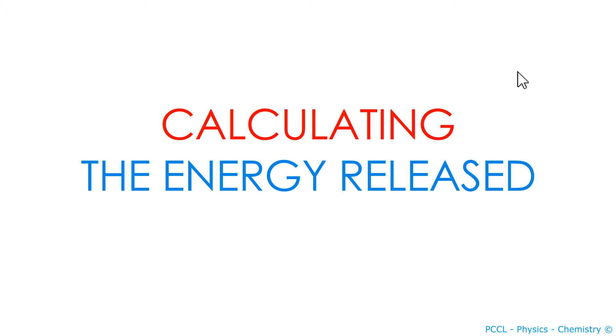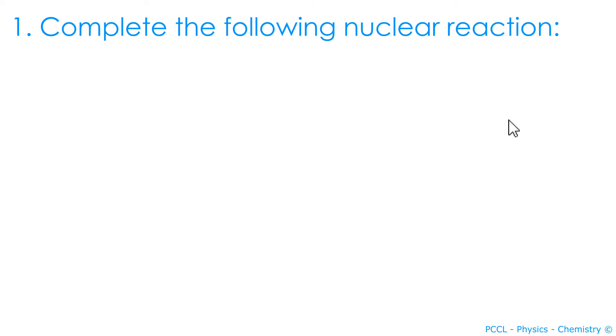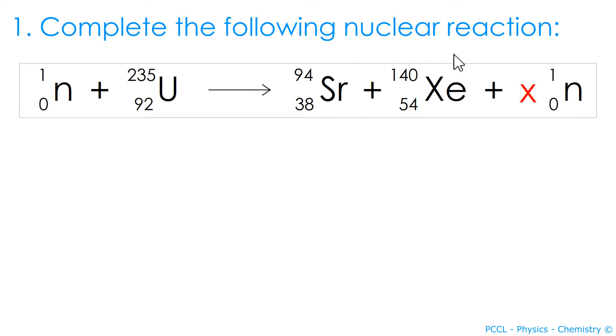I will give you an example in the form of a corrected exercise. We are going to do this together. You may be asked to complete the following reaction. Here there is the letter X, which is the unknown. How many neutrons? We will forget what we said before, and you have to find the number of neutrons. Two or three?